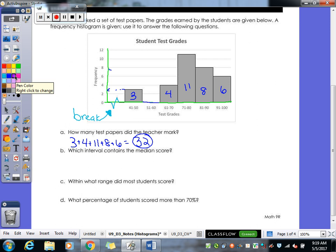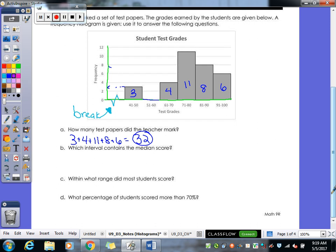So they want to know which interval contains the median score. So who remembers what the median actually is? Yes, median means our middle number. Now since we don't actually know what the numbers themselves are, it's difficult to find your middle number. So the way we do it with our histograms is I'm going to take my thirty-two total scores, divide it in half, and what do I get? Sixteen. So that means I'm looking for my sixteenth test score. That's going to be my median, that's going to be my middle.